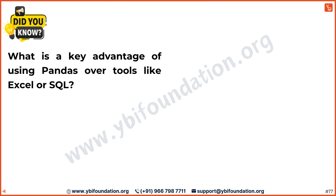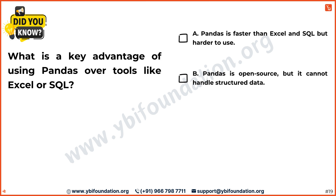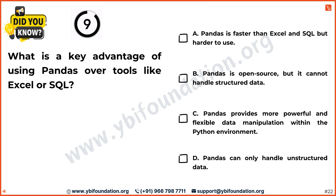Time to check your understanding. What is a key advantage of using pandas over tools like Excel or SQL? Option A: pandas is faster than Excel and SQL but harder to use. Option B: pandas is open source but it cannot handle structured data. Option C: pandas provides more powerful and flexible data manipulation within the Python environment. Option D: pandas can only handle unstructured data. The correct answer is Option C — pandas provides more powerful and flexible data manipulation within the Python environment.